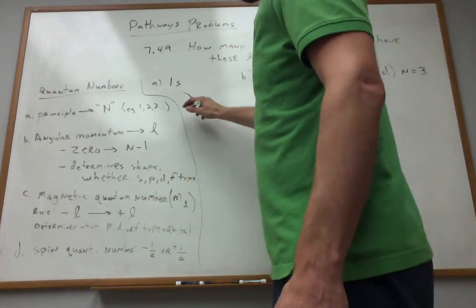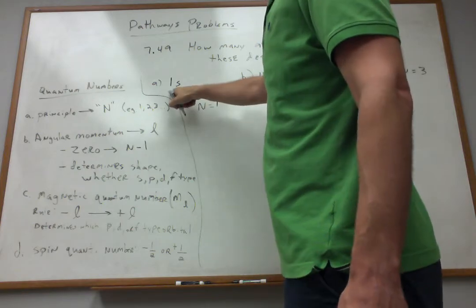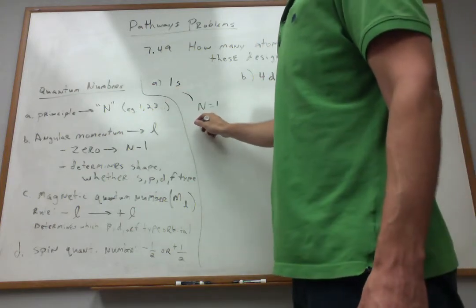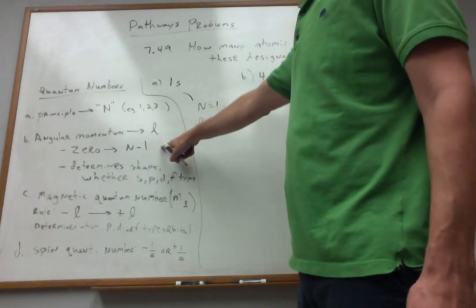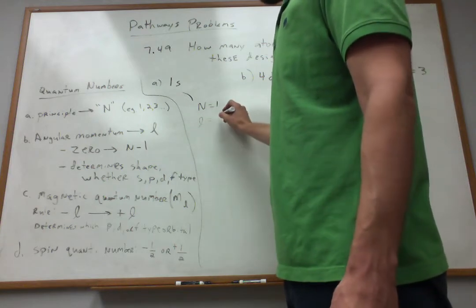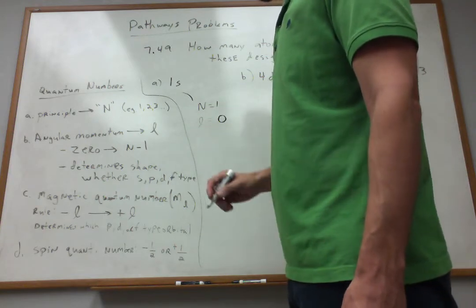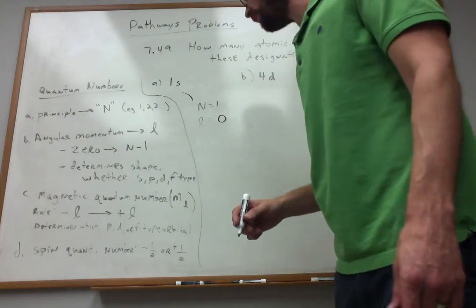So the principle in the 1s, the principle number is n equals 1. So what is our l value, then, if we follow our rule? Well, the rule for that is 0 to n minus 1. Well, n is 1. 1 minus 1 is 0. So it seems like my only option is l equals 0 when n is equal to 1.